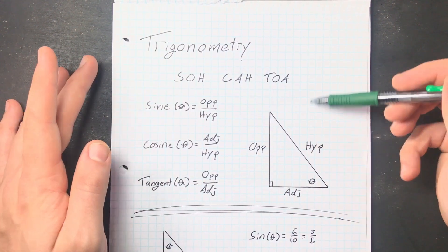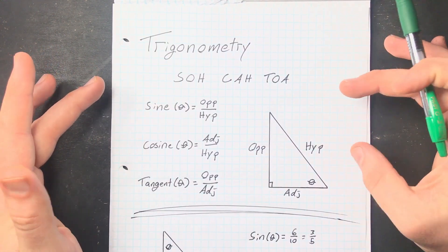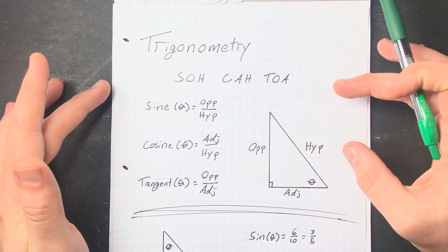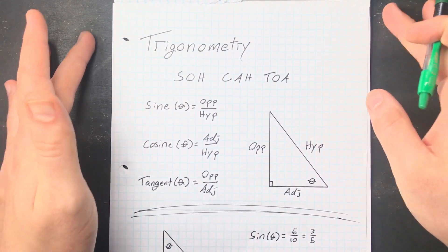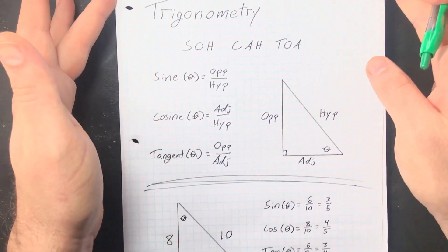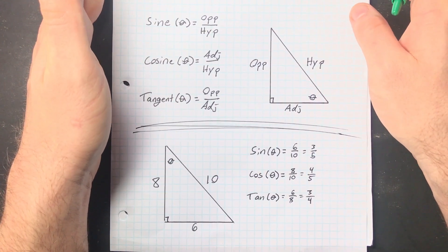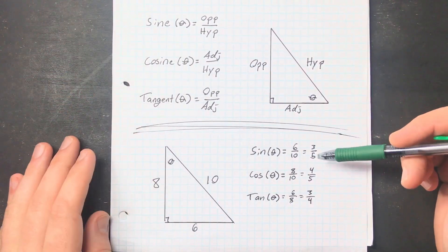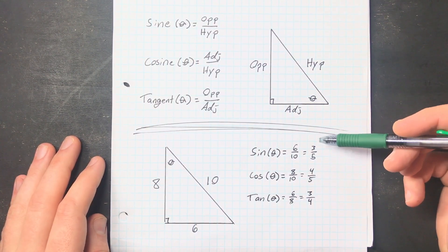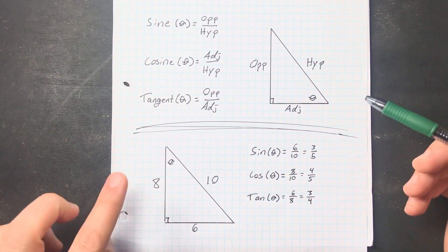Really what this is, is just a way to describe the side lengths of a right triangle. Even if the angle moves, we can learn a lot from the right triangle just by knowing what the sine, cosine, and tangent of an angle is.